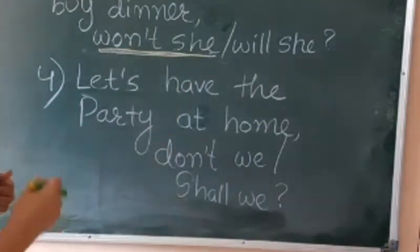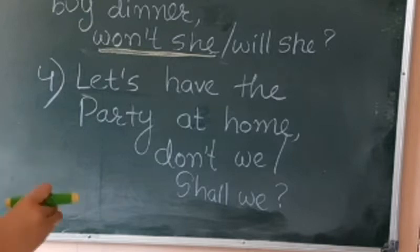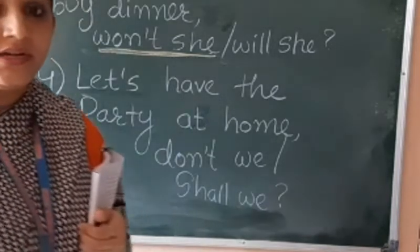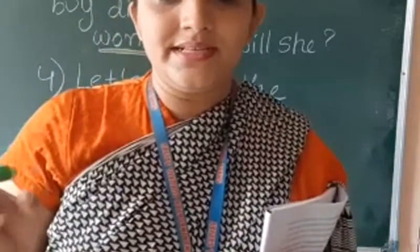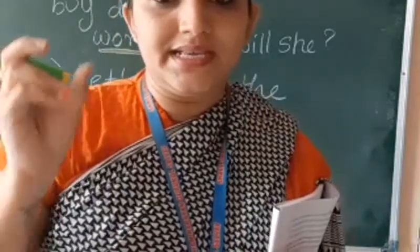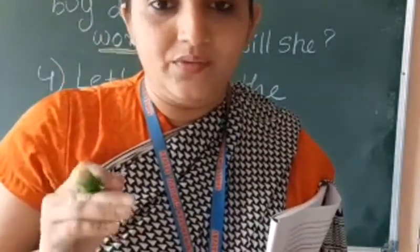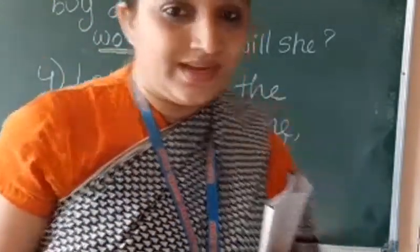Now the next one: 'Let's have the party at home.' I already told you that whenever the sentence begins with 'let's,' we have to add 'shall.' So the question tag will be: shall we?